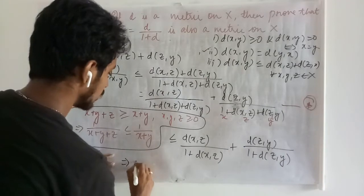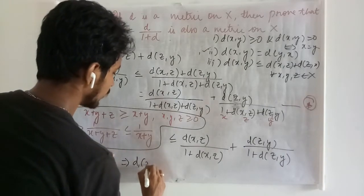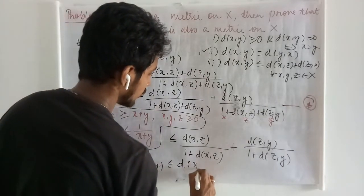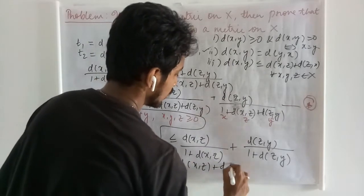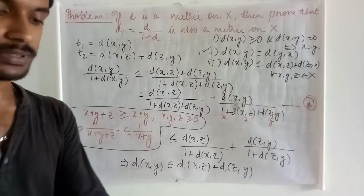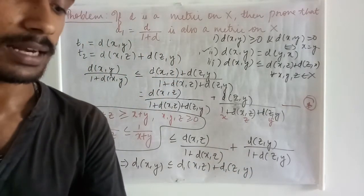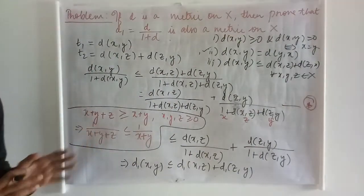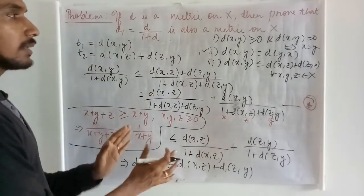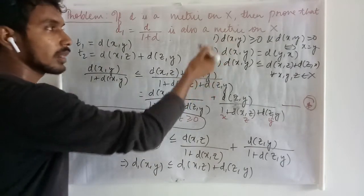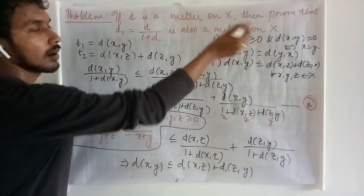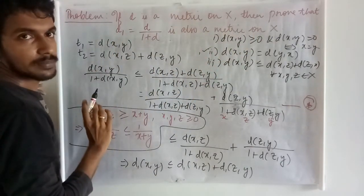This tells me D1(x,y) ≤ D1(x,z) + D1(z,y), and this proves the triangle inequality for this problem. This completes all the requirements to confirm that D1 is a metric on X.